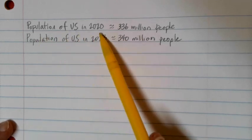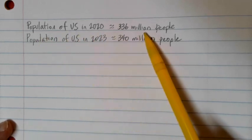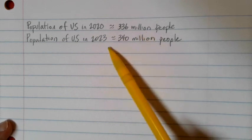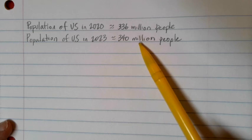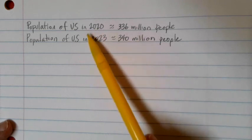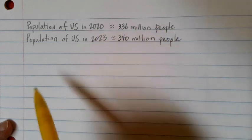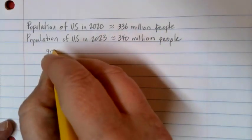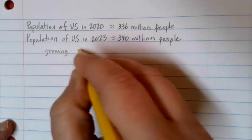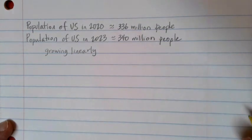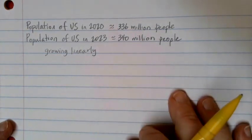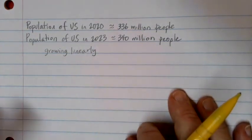The population of the U.S. in the year 2020 was about 336 million people. By 2023, the U.S. population had grown to 340 million people. In this example, what we would like to do is, assuming that the population has been growing linearly, create a linear growth model equation that can describe the population of the U.S. over time.